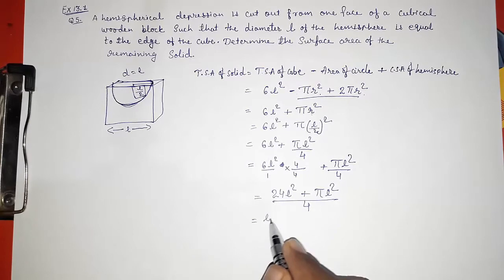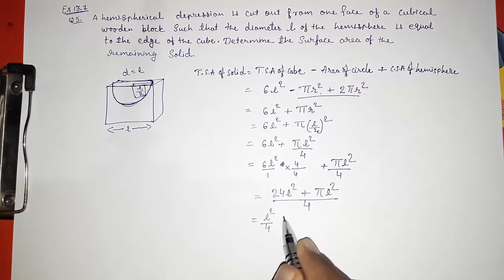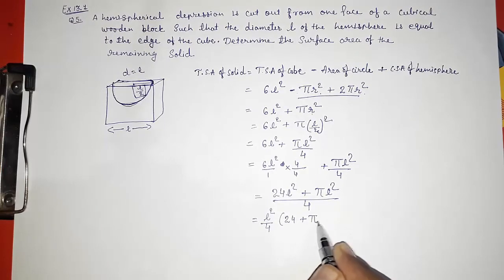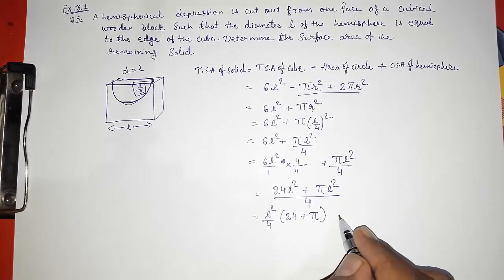Now take out L² and this 4 common, L² by 4 common, so here you will get 24 plus π. So the area will be L² by 4 times (24 + π) centimeter or whatever they had given, meter or centimeter square unit.